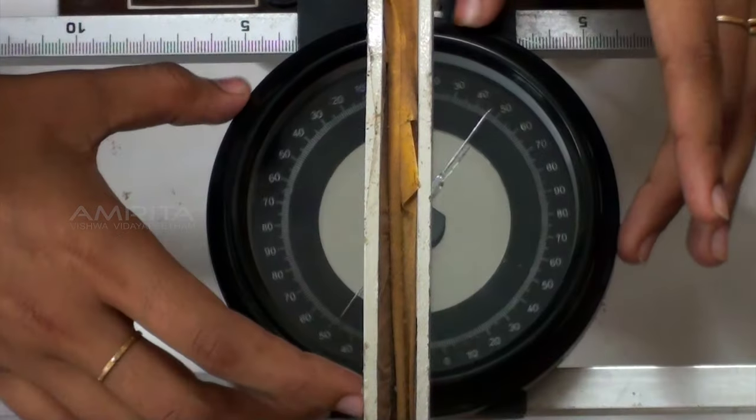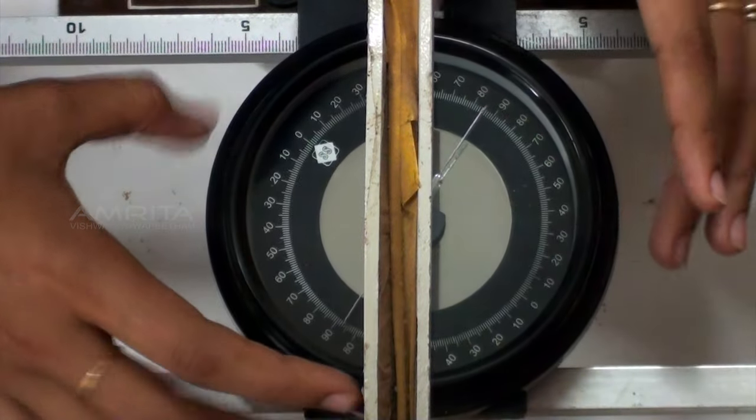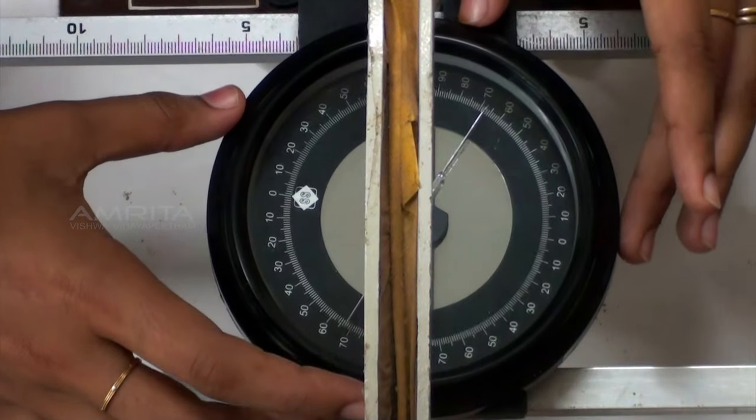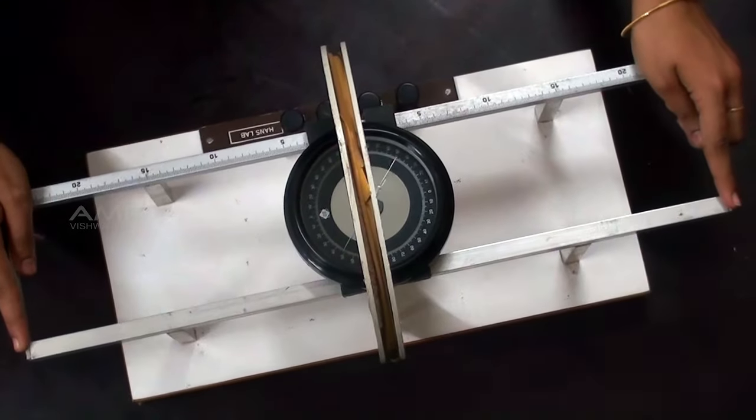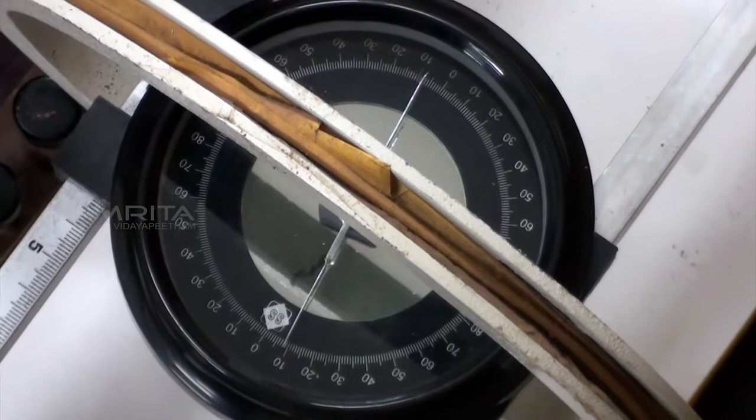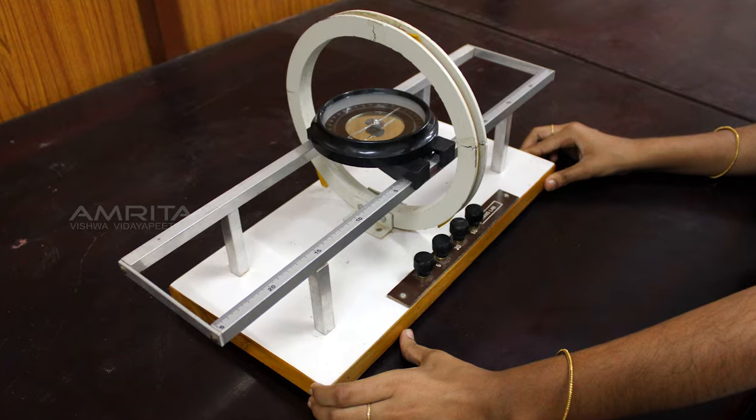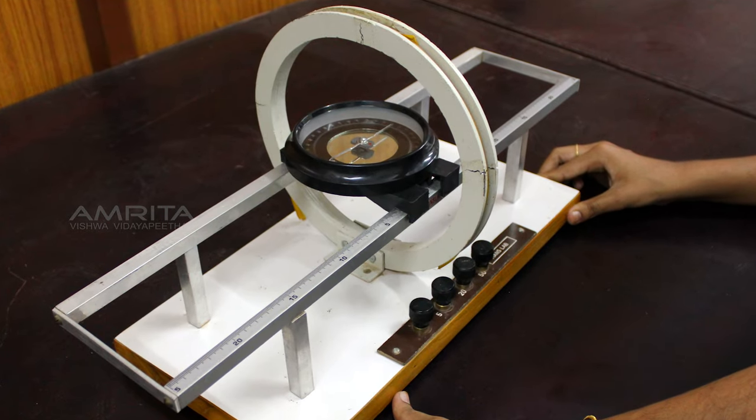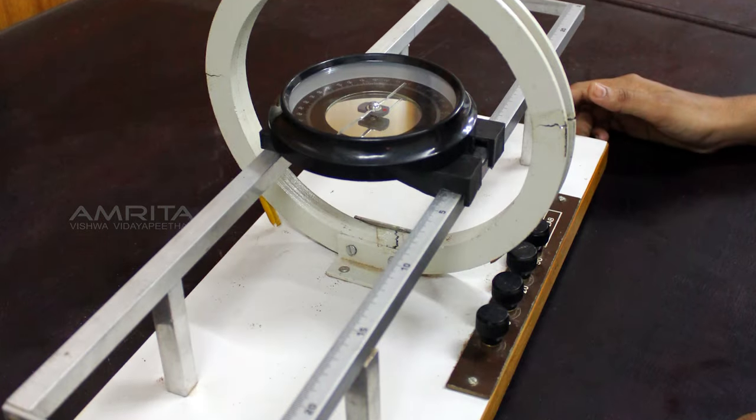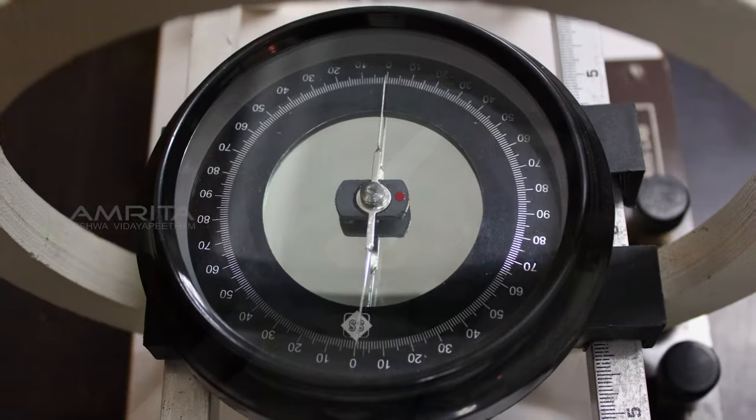Rotate the compass box till its 90-90 reading becomes parallel to the plane of the circular coil. By rotating the whole apparatus in the horizontal plane, make the aluminum pointer read 0-0. Now, the apparatus is in the magnetic meridian and the coil, needle, and its image all lie in the same vertical plane.